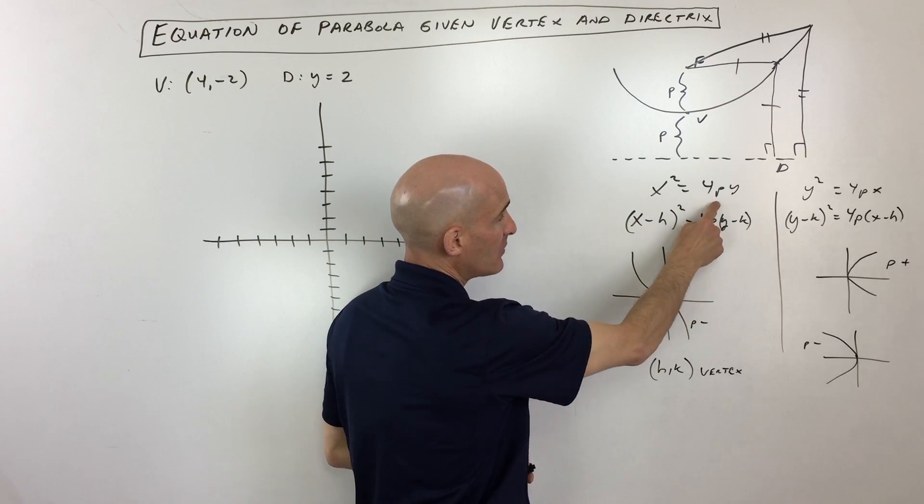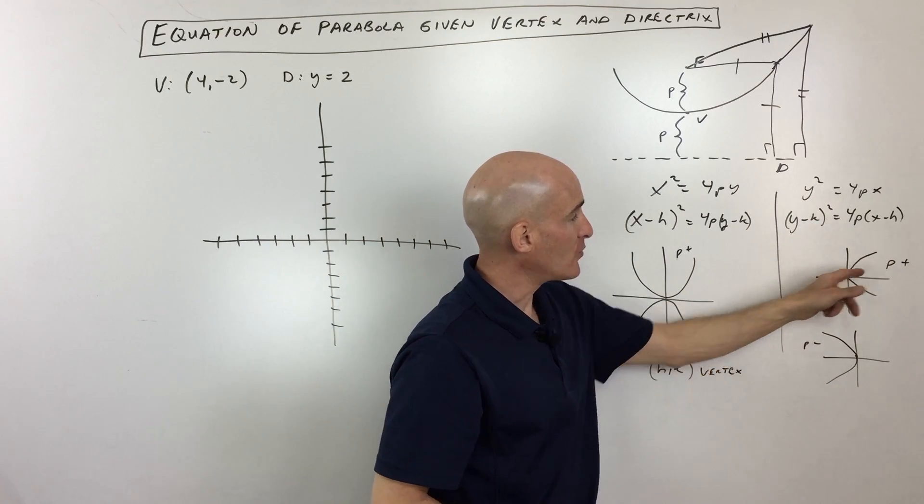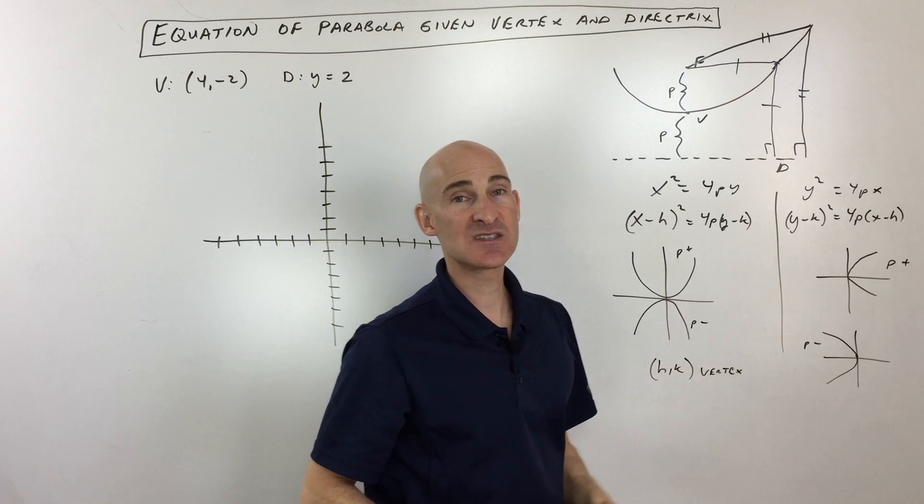If p is positive, it opens up. If p is negative, it opens down. And then if it's a y-squared variety, it opens right or left. It opens to the right if p is positive, left if p is negative.